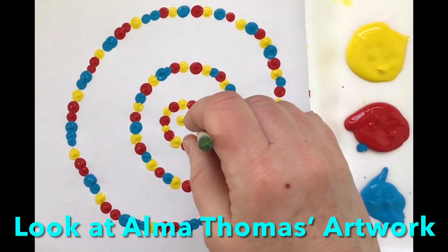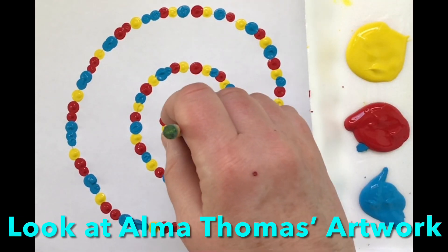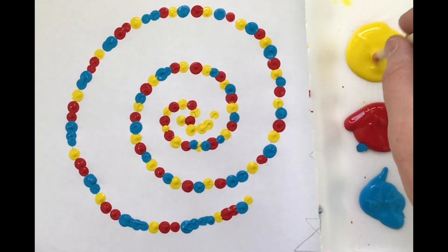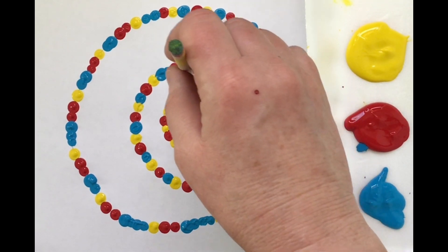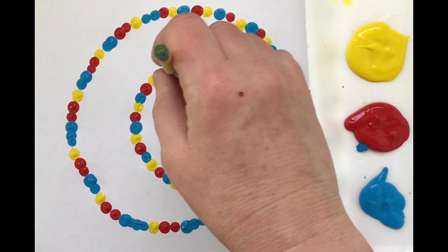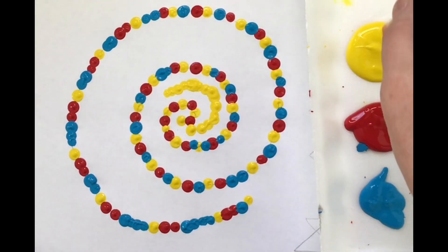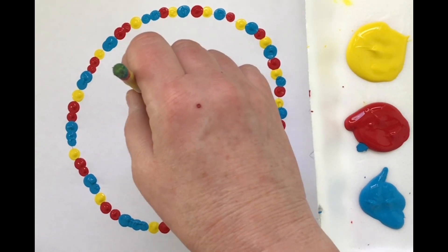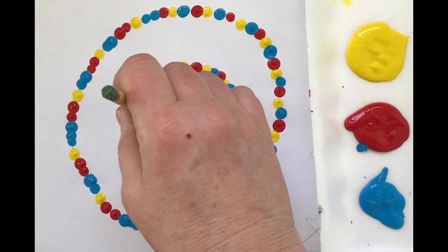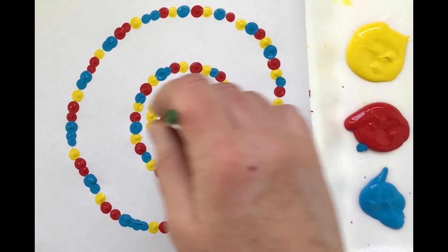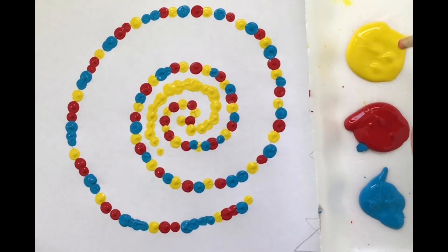And if you look at Alma Thomas—Alma Thomas is an artist and she was part of the color field—so if you look at her work, it's really cool how she places her paint on the picture plane, which is basically your piece of paper or whatever you're working on. So I am working on the paper and I'm using tempera paint.